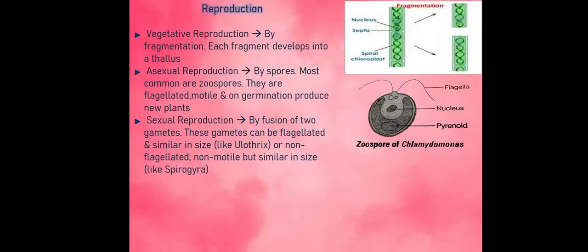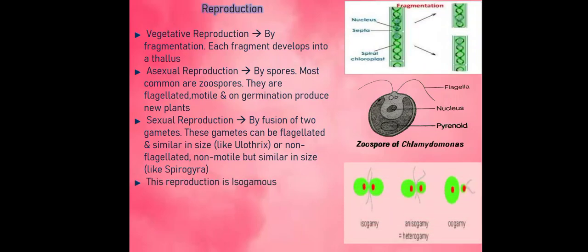These gametes can be flagellated and similar in size like in Ulothrix or Spirogyra. This kind of reproduction is known as isogamous, iso means same.